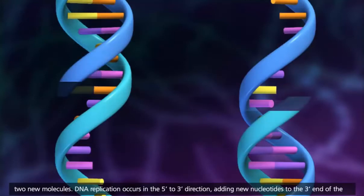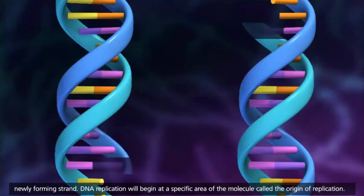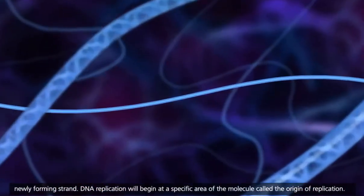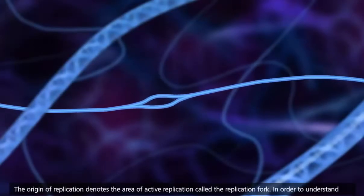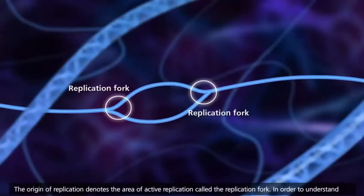DNA replication occurs in the 5' to 3' direction, adding new nucleotides to the 3' end of the newly forming strand. DNA replication will begin at a specific area of the molecule called the origin of replication. The origin of replication denotes the area of active replication called the replication fork.